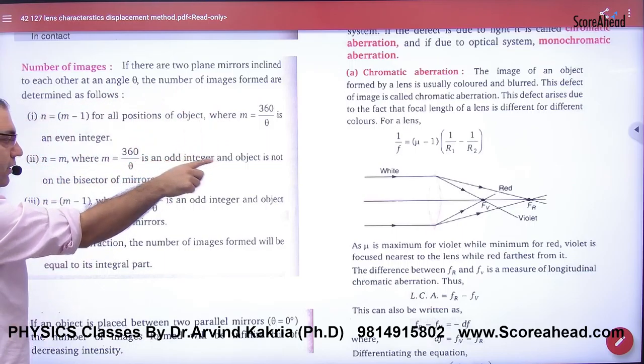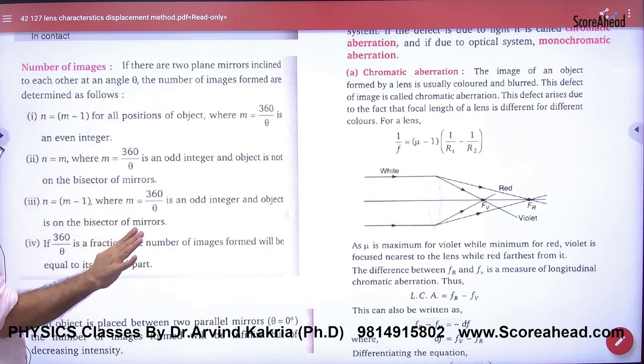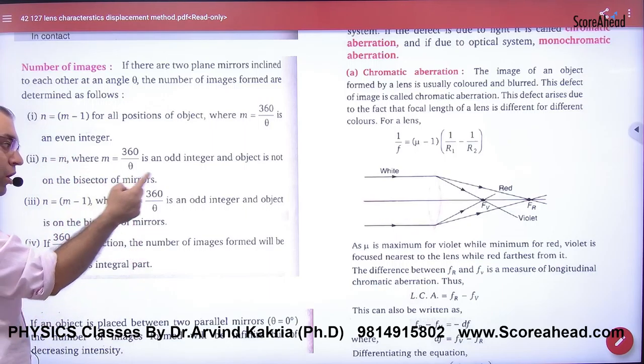But if you have odd integer and the object is on the bisector of the mirror, then the answer will remain the same, m-1.